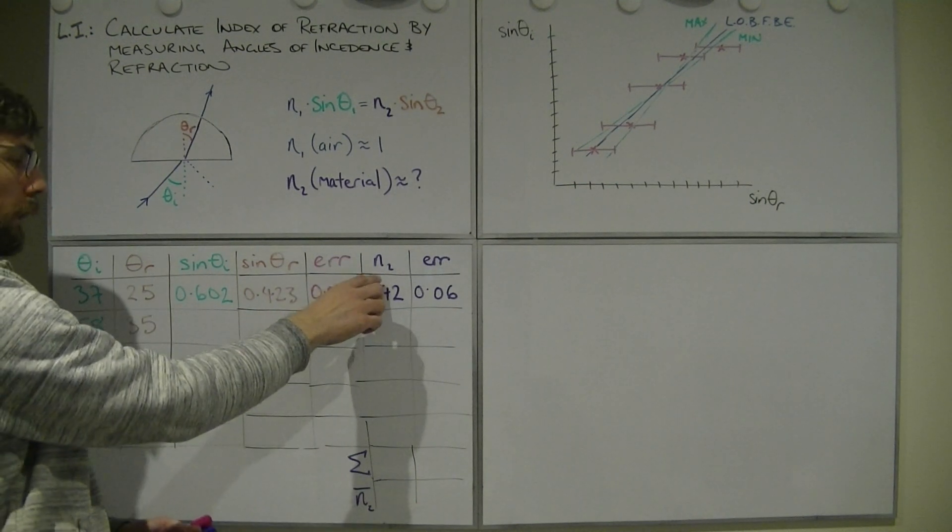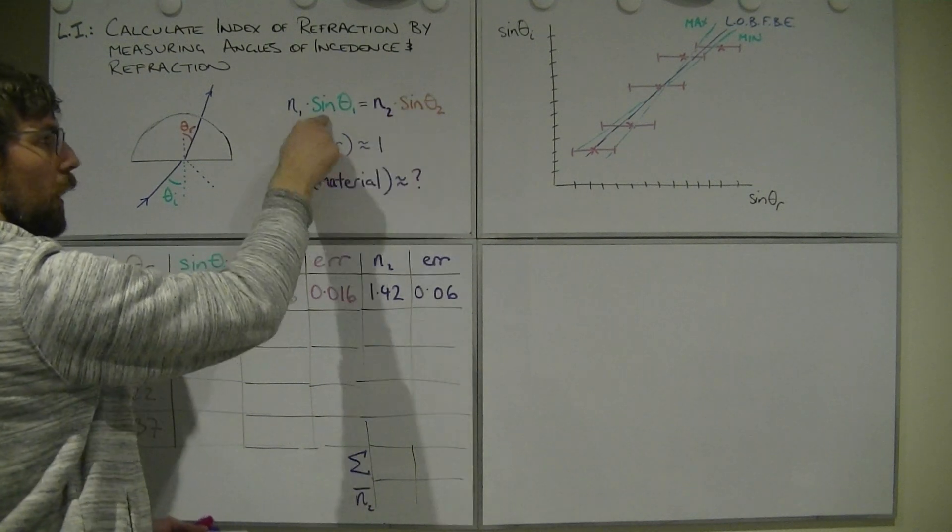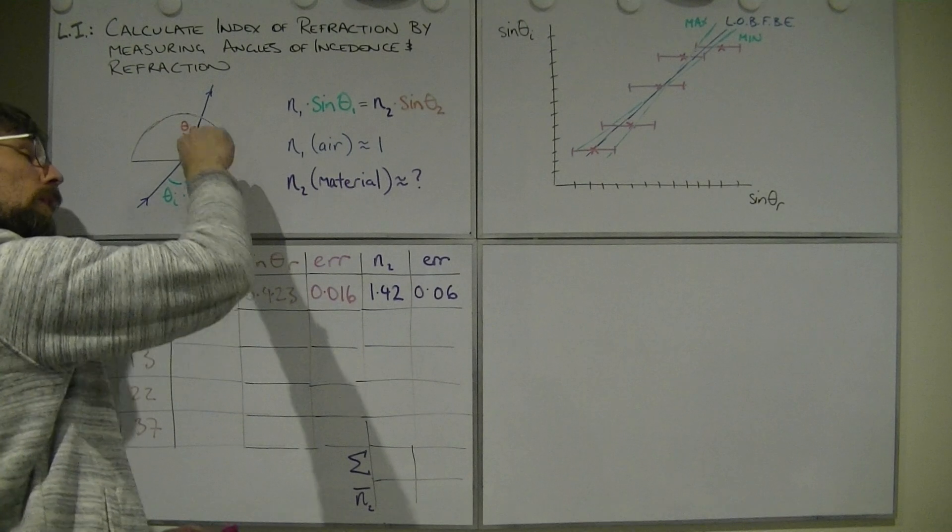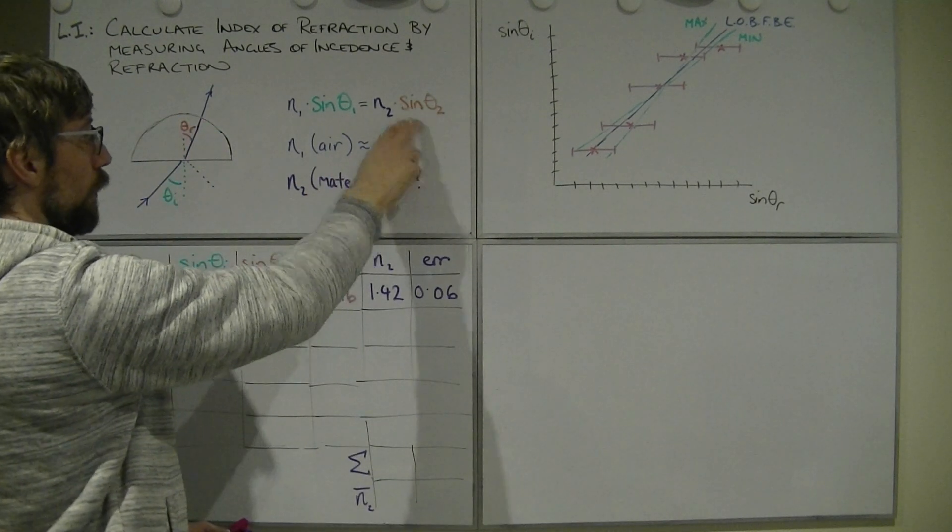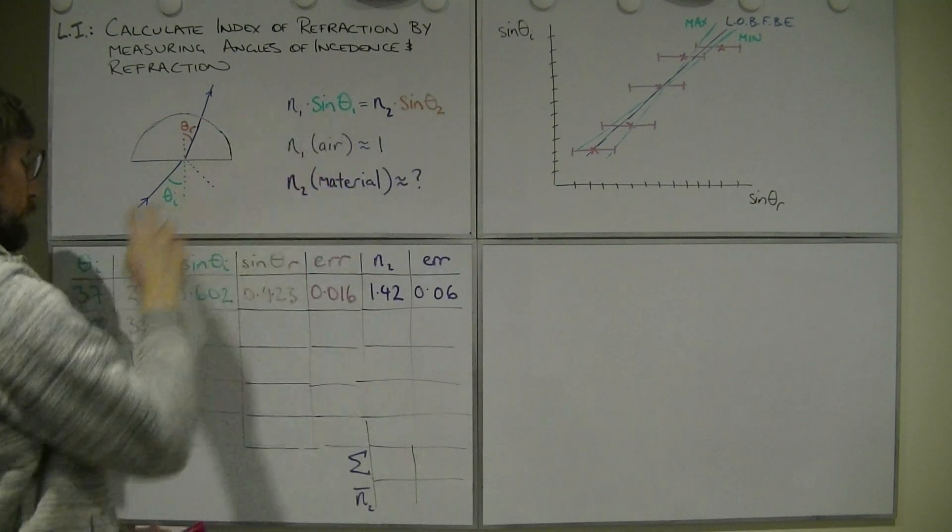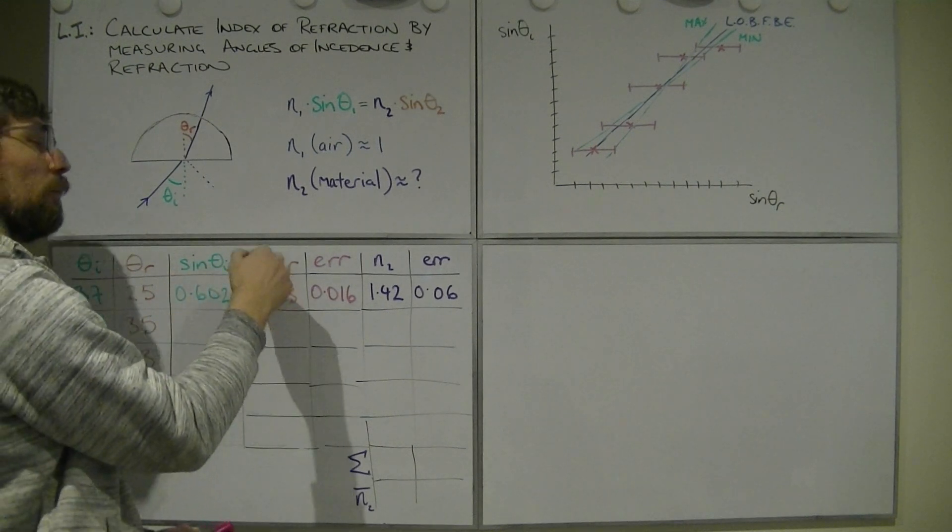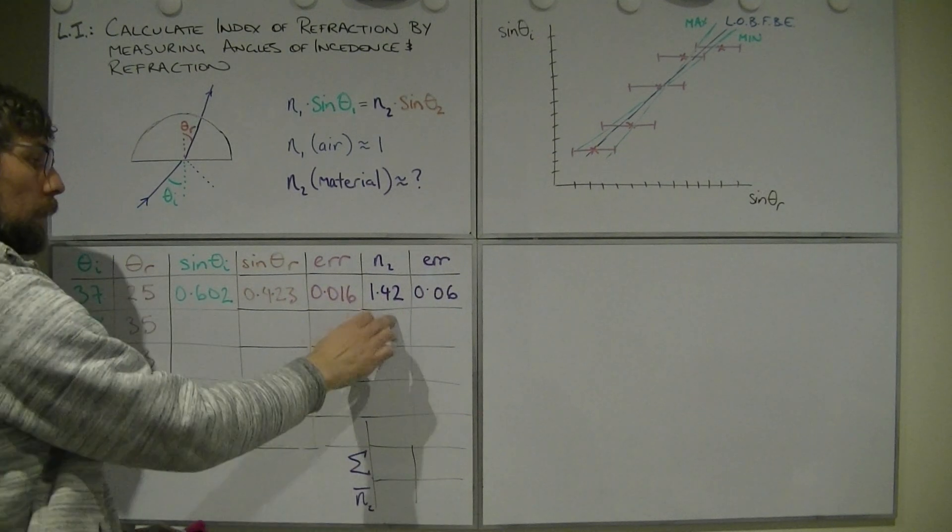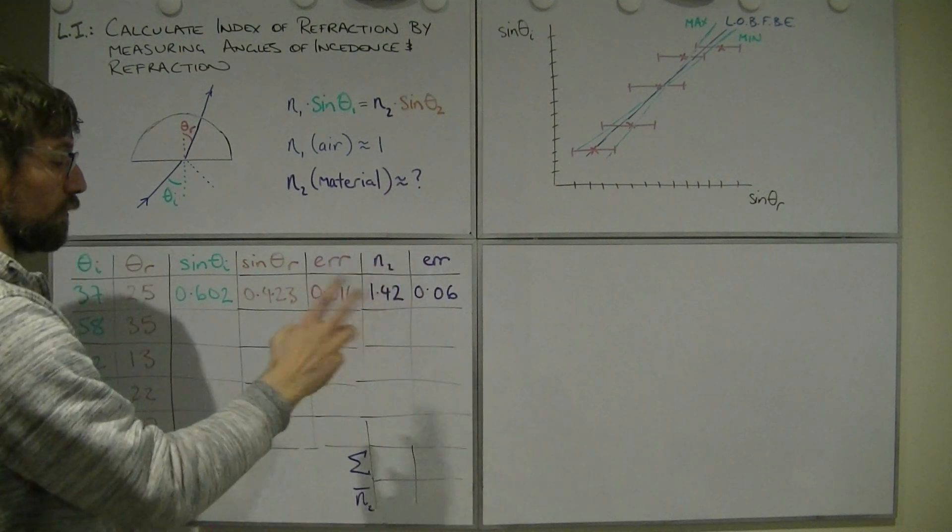Well, we want to know what n2 is, so rearranging, I've just got to divide by sine of the second, which is the angle of refraction in this case. So, sine of the incident divided by sine of the refraction. Turns out we get 1.4 and a bit.